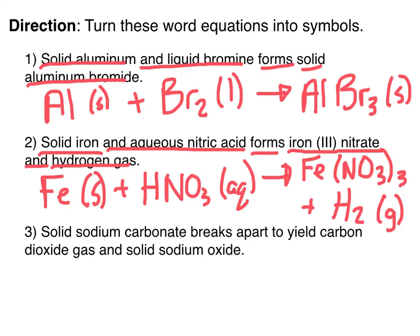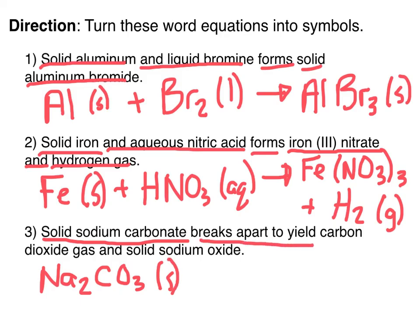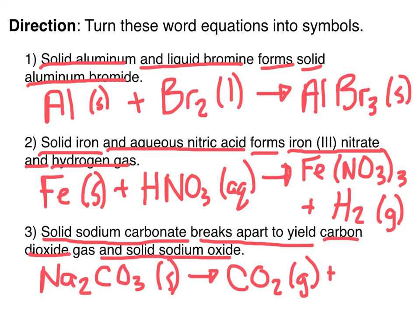Example 3: solid sodium carbonate breaks apart to yield carbon dioxide gas and solid sodium oxide. Sodium carbonate: carbonate is −2, sodium is +1, so the formula is Na2CO3(s). 'Breaks apart to yield' is just a fancier version of an arrow. Carbon dioxide gas is CO2(g). Solid sodium oxide is Na2O(s). That's how you turn word equations into symbols. Make sure to review ionic naming and molecular compound naming before tomorrow.